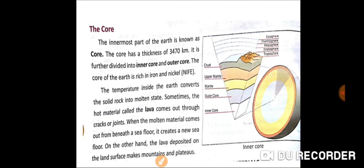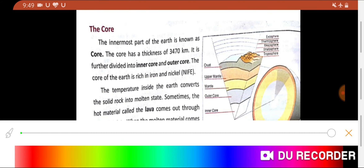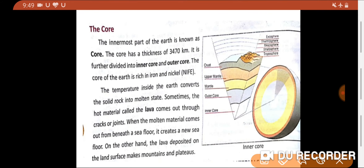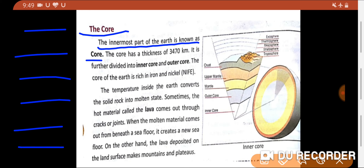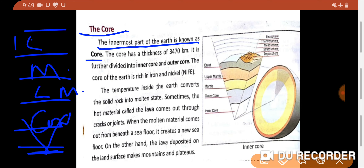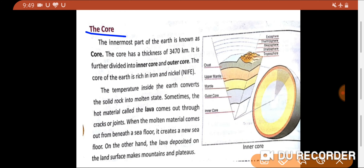Now let's move to the next layer — the core. The innermost part of the earth is known as the core. We have the crust as the first layer, then the mantle in two types (upper and lower), and the deepest area is the core. The core is also divided into two parts: the outer core and the inner core.